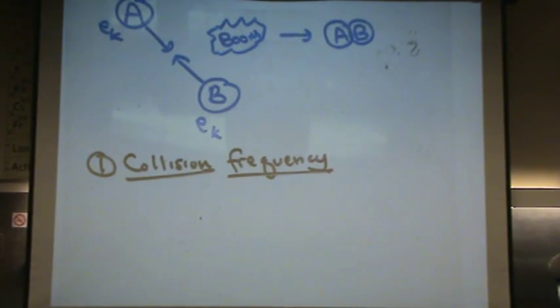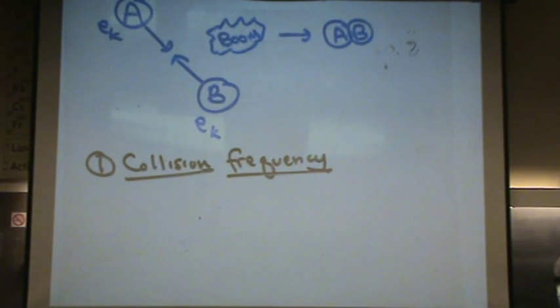However, they don't. So actually, for every collision that happens, we're looking at about 10 to the minus 4 molar per second. So, a drop of 10 to the 10 of what actually yields a product for all the possible collisions that happen. So the main concept here is only a fraction of collisions yield product.